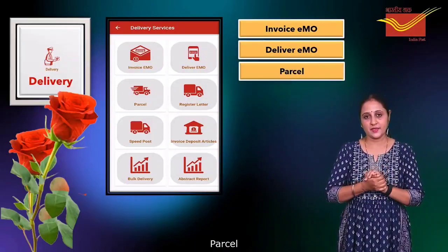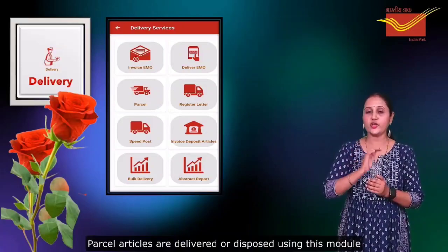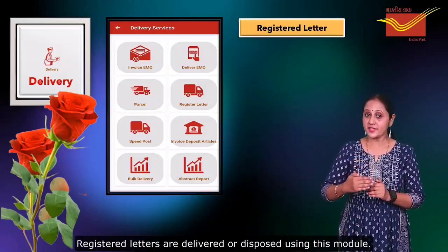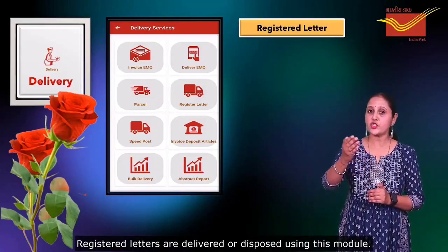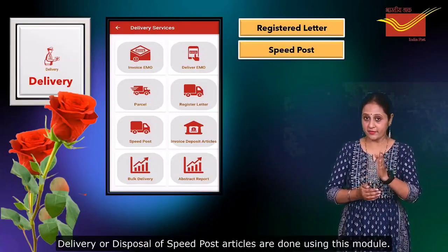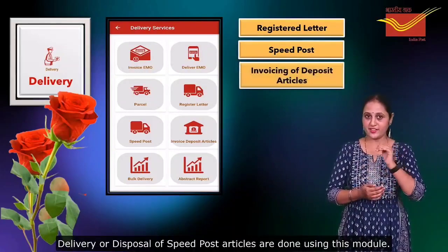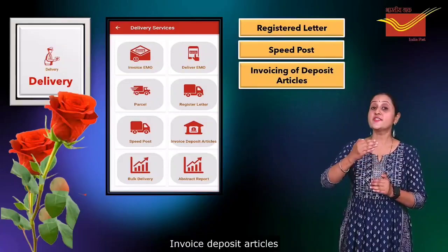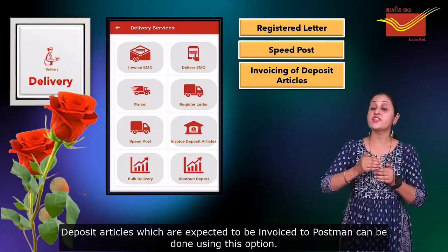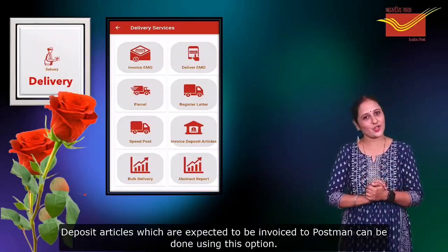Parcel: parcels are delivered or disposed using this module. Registered Letter: registered letters are delivered or disposed using this module. Speed Post: delivery or disposal of speed post articles can be done using this. Invoice Deposit Articles: deposit articles expected to be invoiced to the postman can be done using this option.